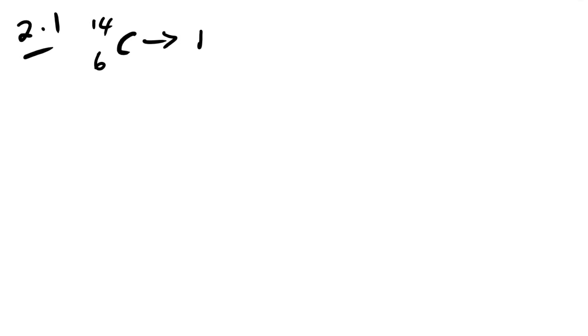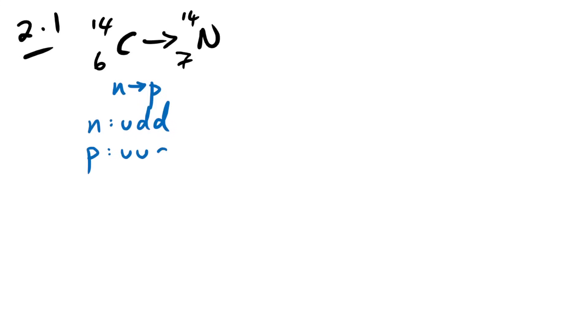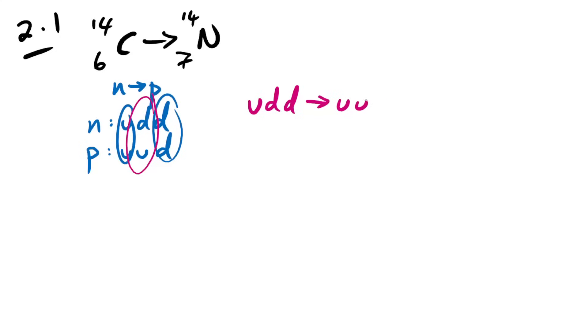Question 2.1: carbon-14 decays via beta minus. State the change of quark composition. We go from carbon-14 to nitrogen-14, so a neutron turns into a proton. The quark composition of a neutron is up-down-down (udd) and a proton is up-up-down (uud). Therefore we can say a down quark changes to an up quark.